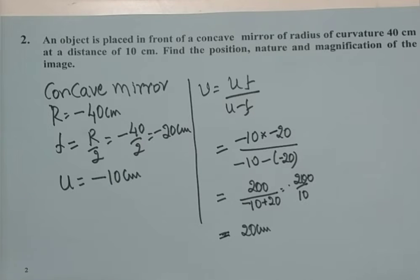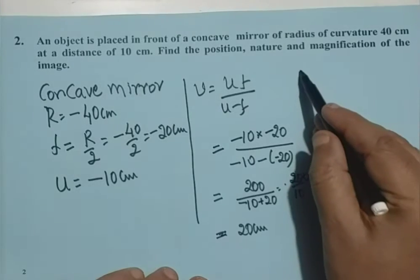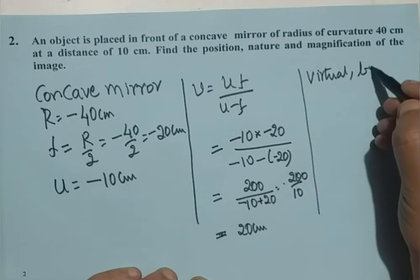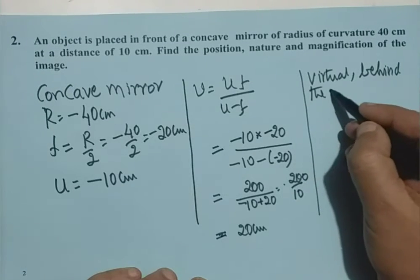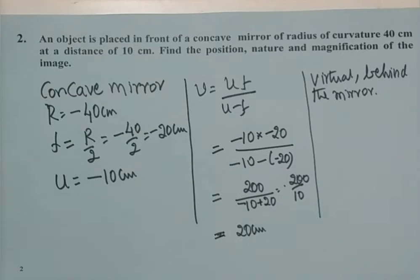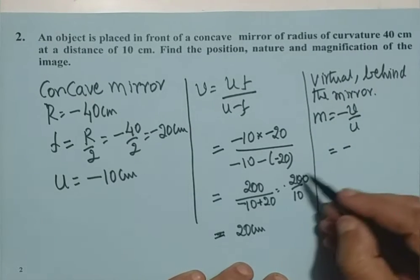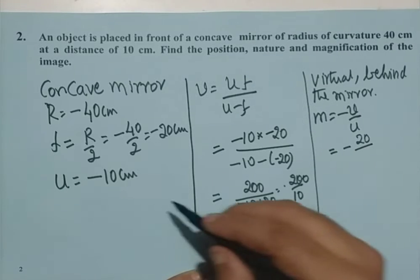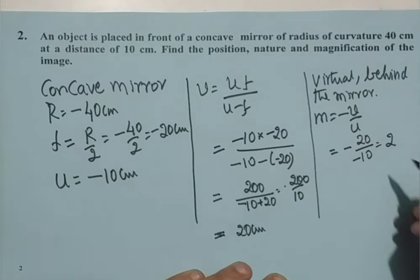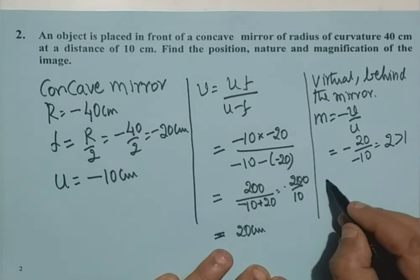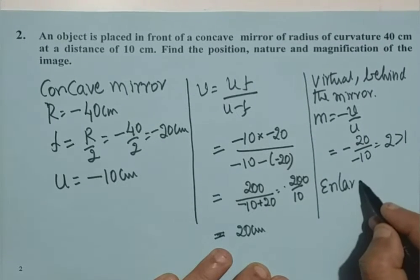The positive sign indicates a virtual image, formed behind the mirror. For magnification, M equals minus V by U, minus of 20 divided by minus 10, that is plus 2. The image is enlarged and behind the mirror, since 2 is greater than 1.